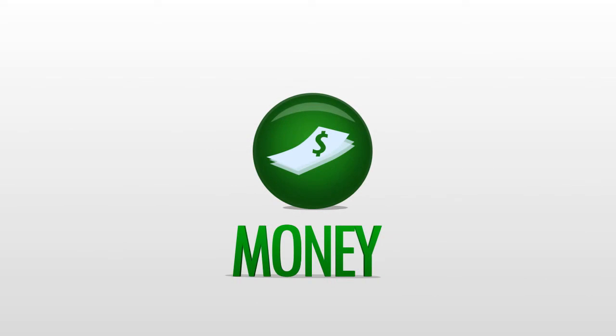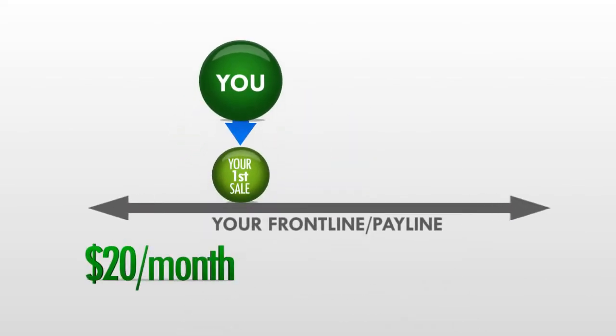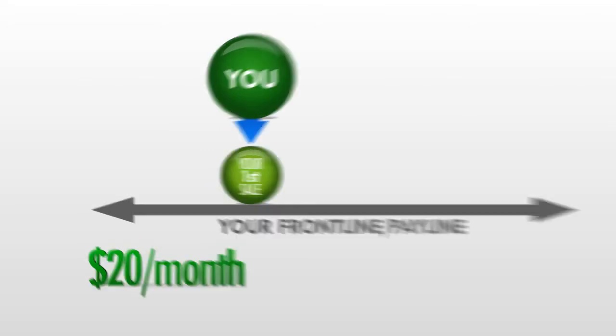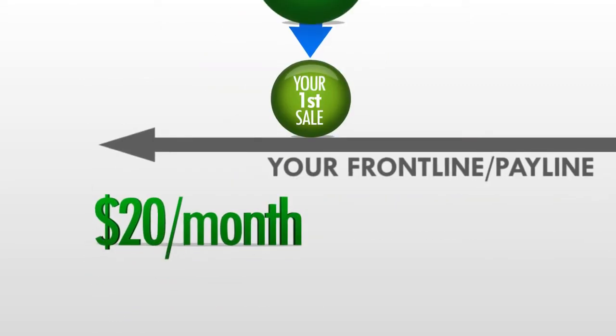So let's talk about the money. First of all, you'll make $20 per month for every sale that falls on your front line. I like to call this your pay line. And it just so happens that your first sale falls on your front line. So even from sale one, you're making a $20 monthly commission.